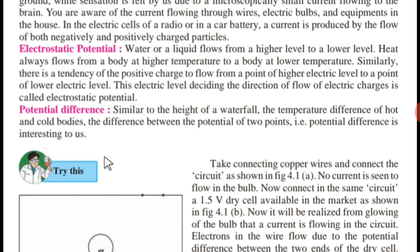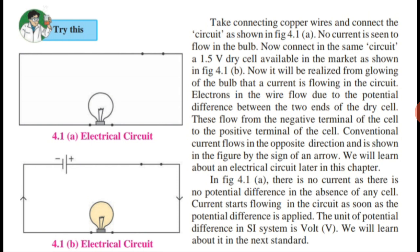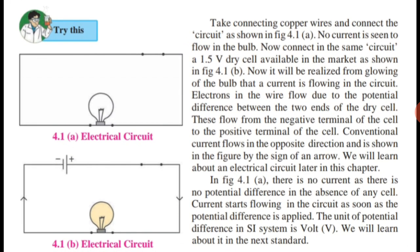In our textbook, there are two diagrams — 4.1a and 4.1b — which you have to self-study. For the electrical circuit activity, take connecting copper wires and connect the circuit as shown in figure 4.1a. No current is seen to flow in the bulb in that configuration.